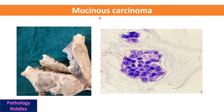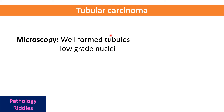In mucinous carcinoma, the tumor is grossly very soft and rubbery; when cut, a lot of blue gelatinous material comes out. Microscopically, tumor cells are surrounded by large lakes of mucin, essentially floating in a big pool of mucin. In tubular carcinoma, microscopically we find tubules with low-grade nuclei.